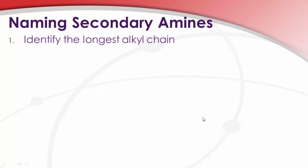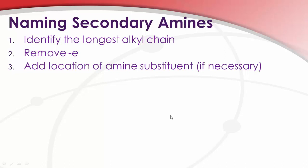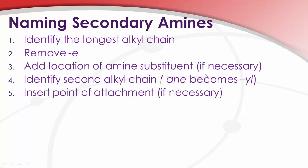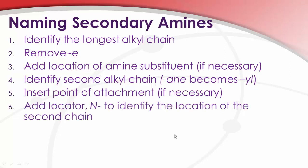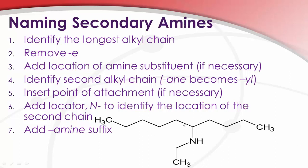Okay, secondary amines, identify the longest chain, remove the e, add the location of the amine substituent, identify the second alkyl chain, change ane from that alkyl chain to yl, and insert the point of attachment if it's necessary. We need the N locator to communicate to the reader the location of the second chain. So here we have 2, 4, 6, 8, 10, decane again, attachment point, 1, 2, 3, 4, 5. So decan-5-amine, N-ethyl. So N-ethyl decan-5-amine.